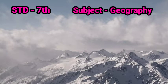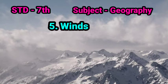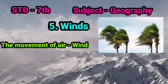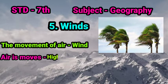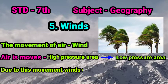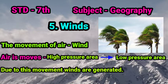In the last lesson video we started our lesson number 5, winds. In this lesson we learned what is the wind. The movement of air is called wind, and we know the air moves from the high pressure area towards the low pressure area. Due to this movement, winds are generated. In the last video, we started studying some types of wind and learned about the planetary wind.